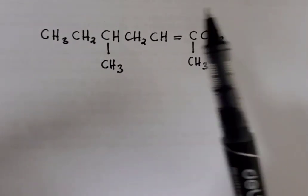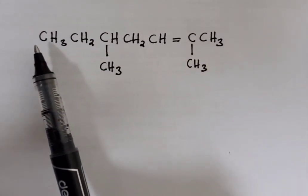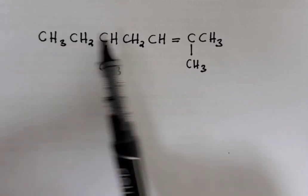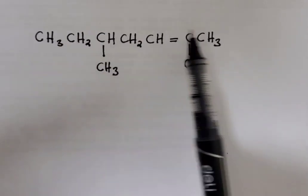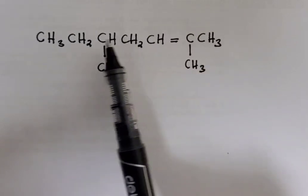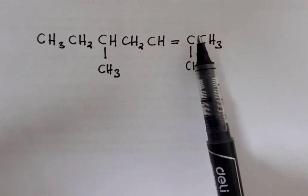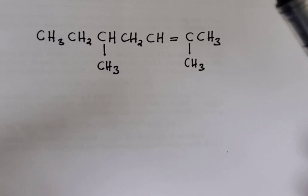How do you name this one? The first thing we need to know is that the biggest chain is in this direction, which is horizontally. So we need to count how many carbon atoms are here: one, two, three, four, five, six, seven. If it's seven, it's hep.